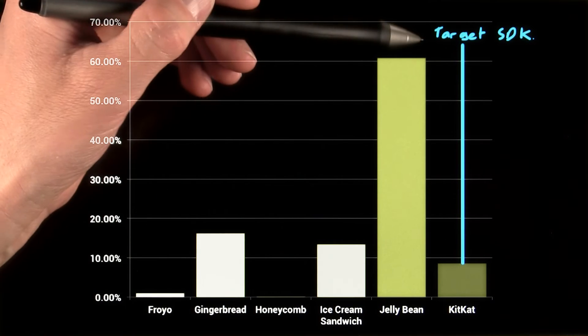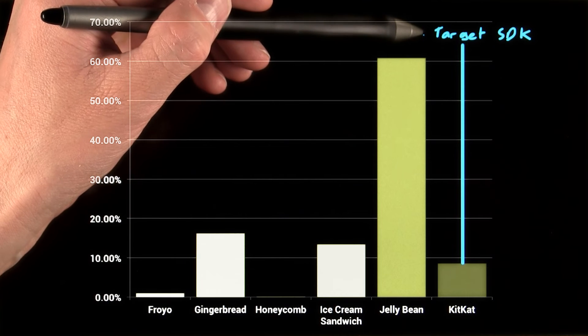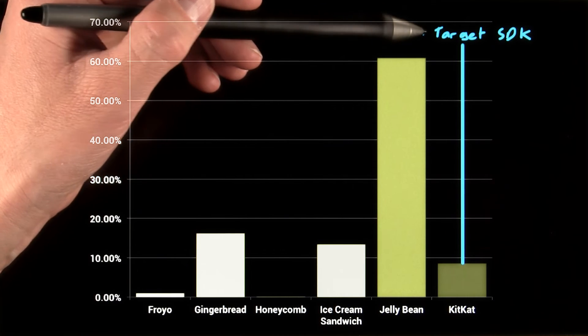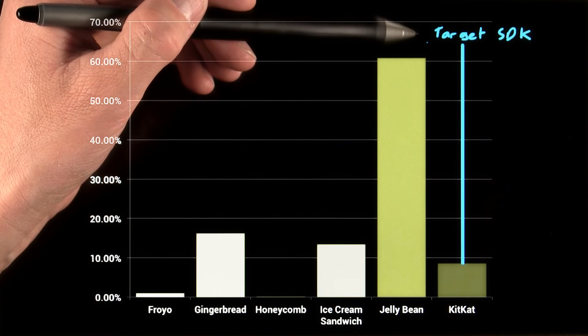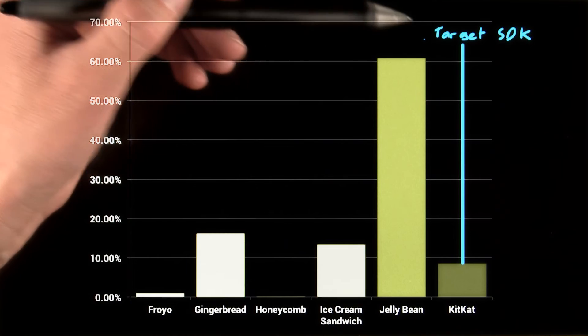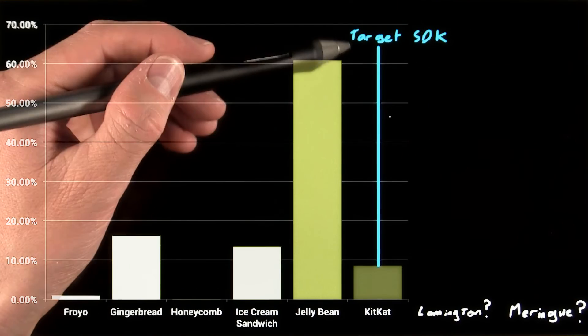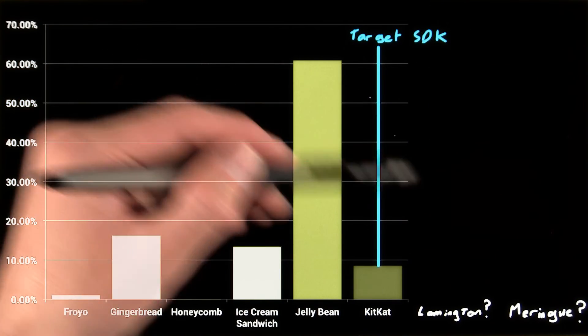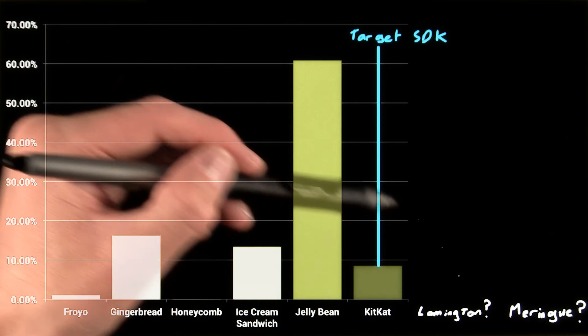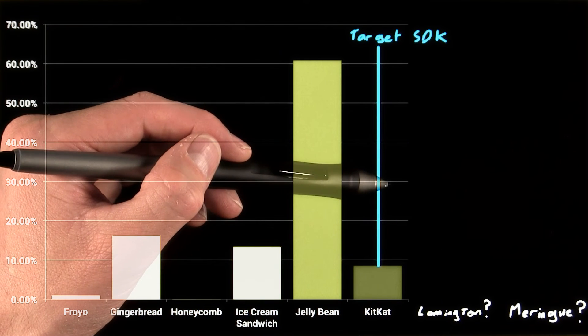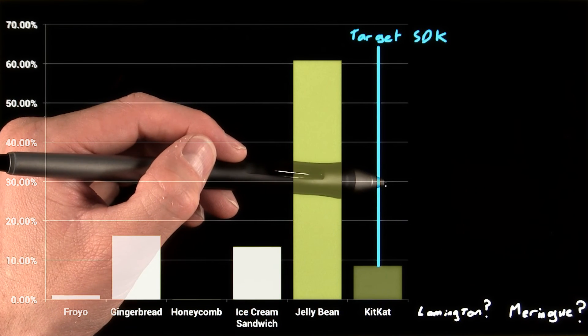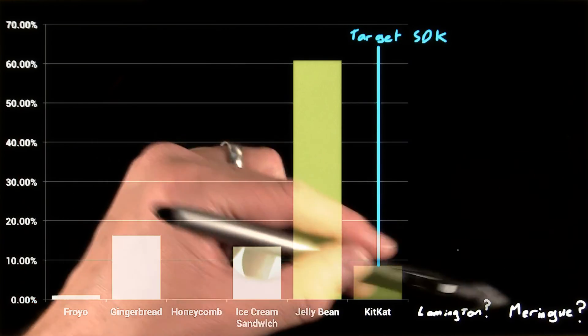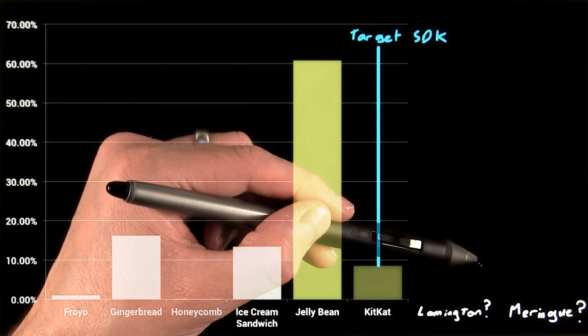By comparison, the target SDK is not a high pass filter. It's used only to declare which platform version you've tested on. An app targeted to a certain API will continue to be forward compatible on future releases. The platform uses the target SDK value in case a future platform makes a significant change to expected behavior, ensuring your app doesn't break when a user's phone gets upgraded.